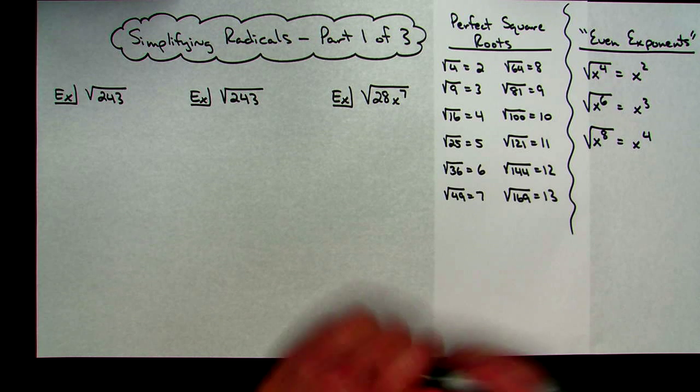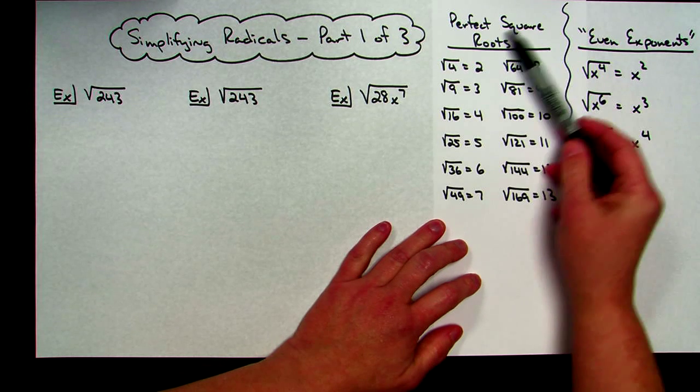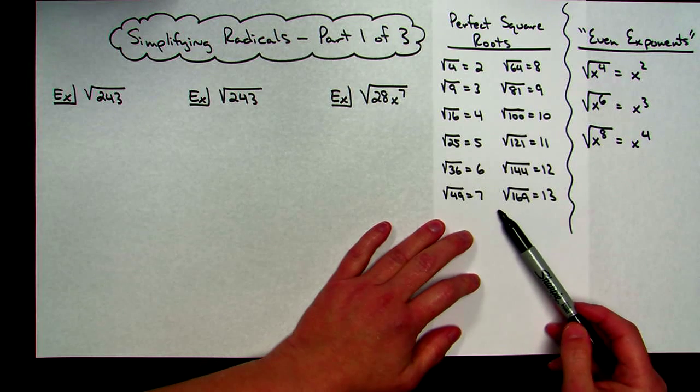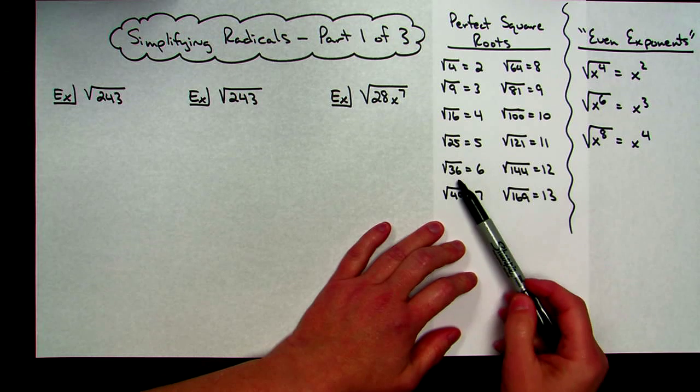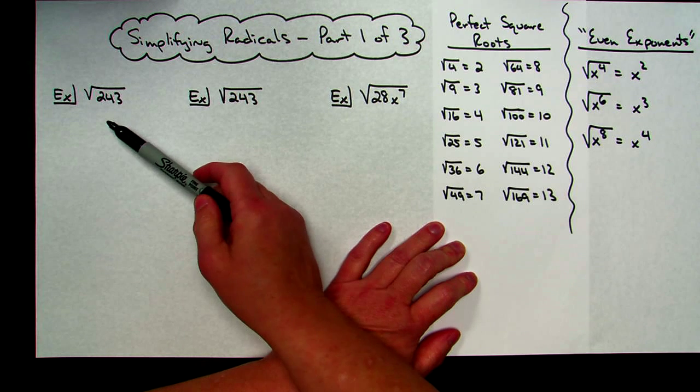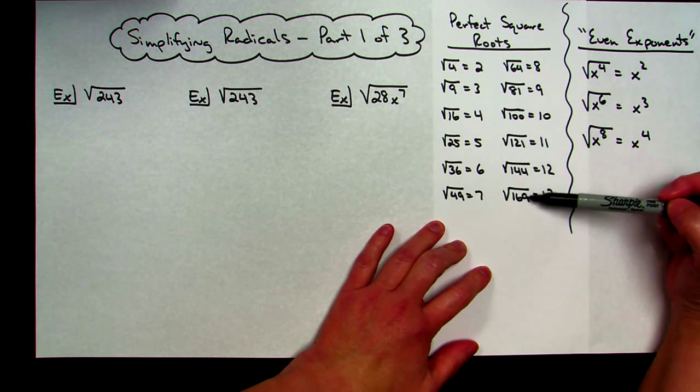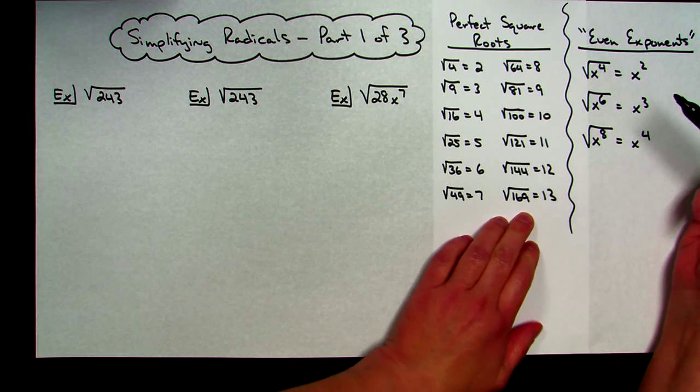Now before I simplify radicals, I like to have a list of my perfect square roots. I'm going to use these perfect square roots to help me simplify my radicals and do it as short as I possibly can. So I just went all the way up to square root of 169. That usually is going to be good enough.